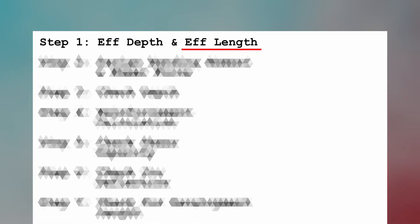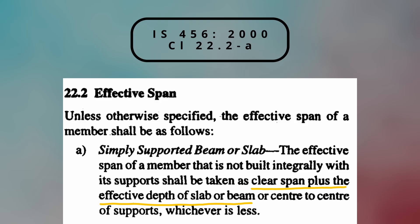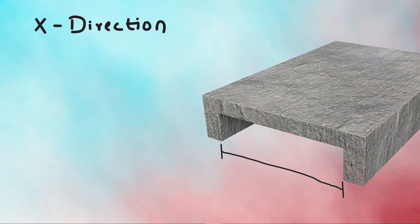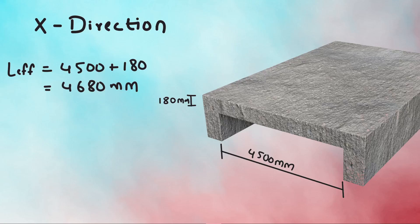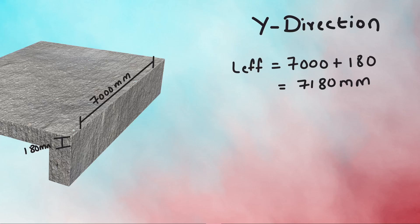Next, effective length is calculated as per Clause 22.2a, which states, effective span of a member that is not built integrally with its support shall be taken as clear span plus the effective depth of slab. For X direction, clear span is 4500 plus 180 mm as effective depth, which equals to 4680 mm. While for Y direction, the clear span is 7000 mm plus 180 as effective depth, which equals to 7180 mm.